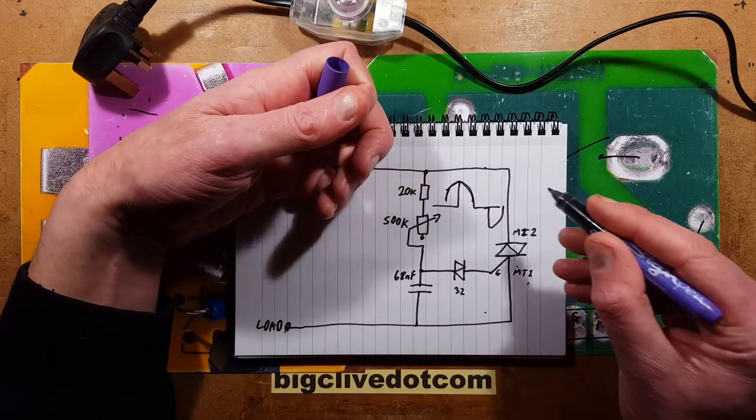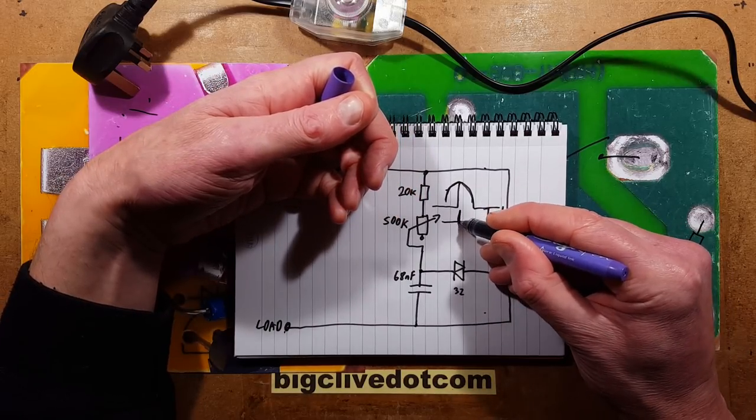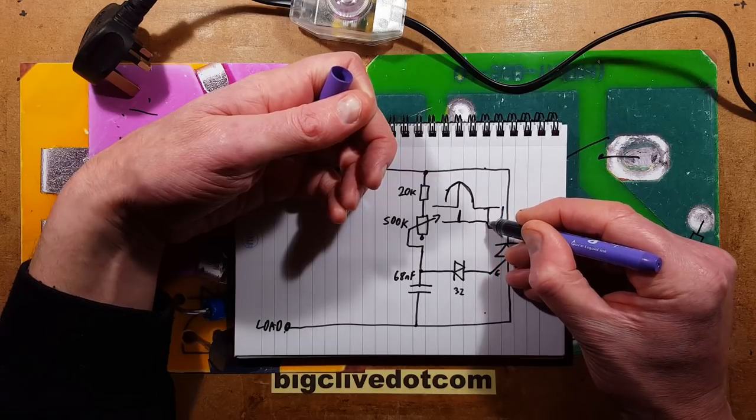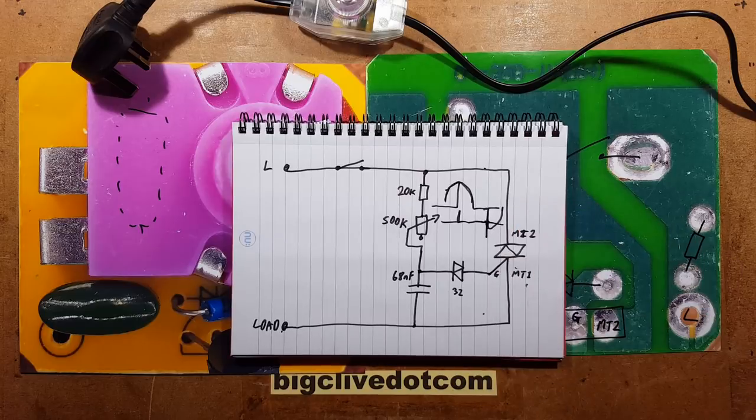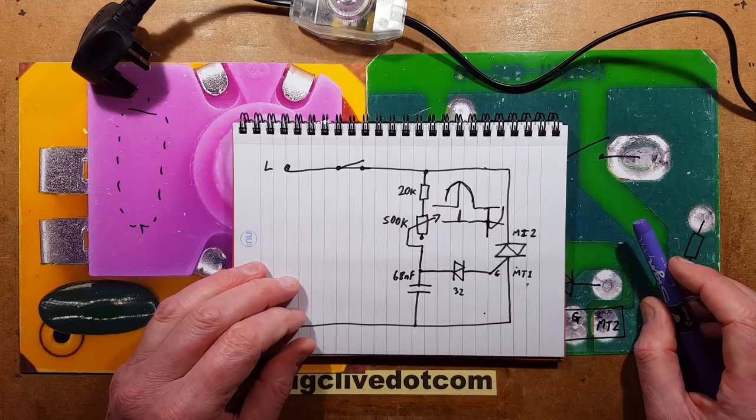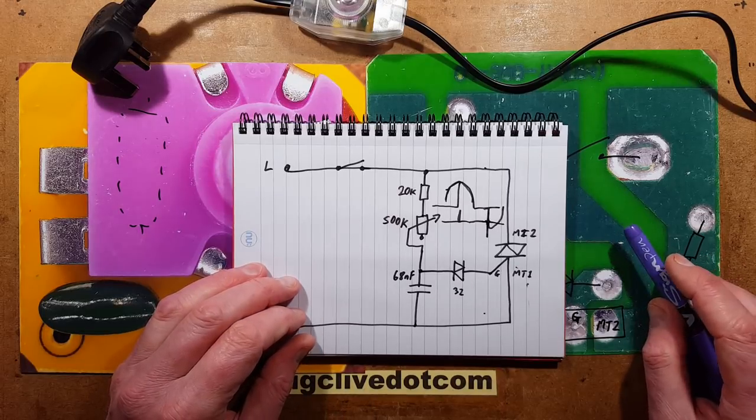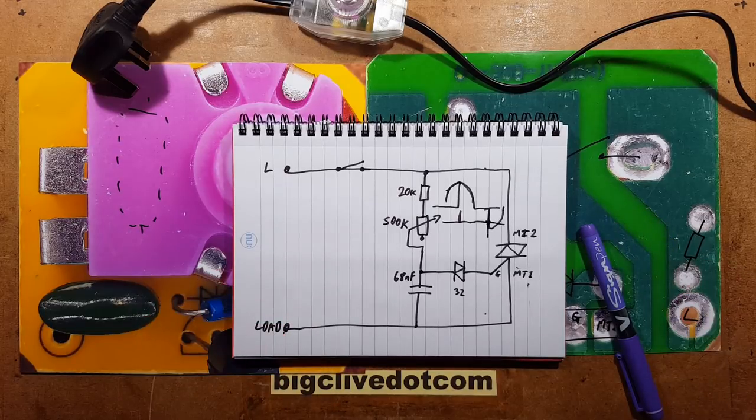So on each half of the sine wave, as the voltage increases across the sine wave, this capacitor would charge through these resistors. Now that's the reason that resistor can't just be zero ohms, because there's a risk that if it was zero ohms and you turned the potentiometer right up to the point it was right at the end here, it would be connected directly to the live rail and too much current would flow.